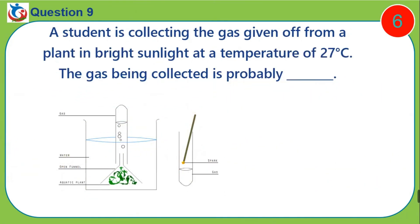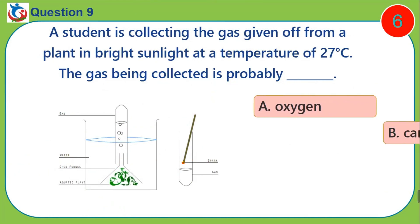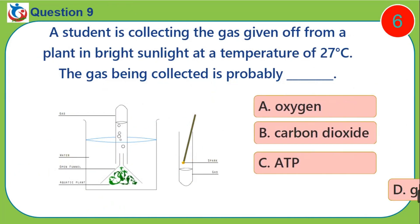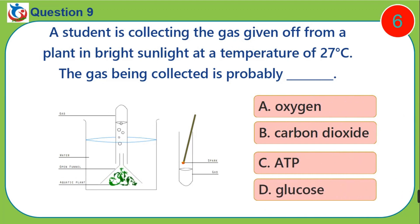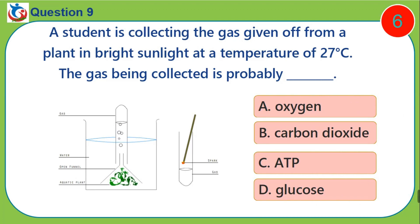Question nine: A student is collecting the gas given off from a plant in bright sunlight at a temperature of 27 degrees Celsius. The gas collected is probably: A) oxygen, B) carbon dioxide, C) ATP, D) glucose.